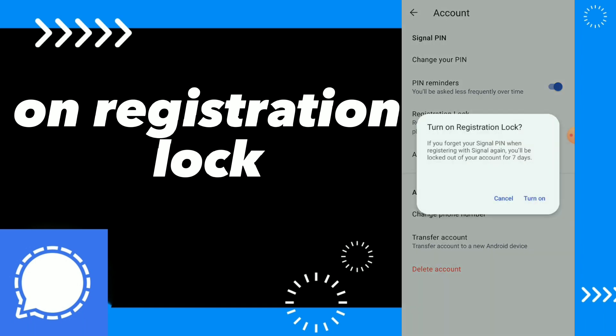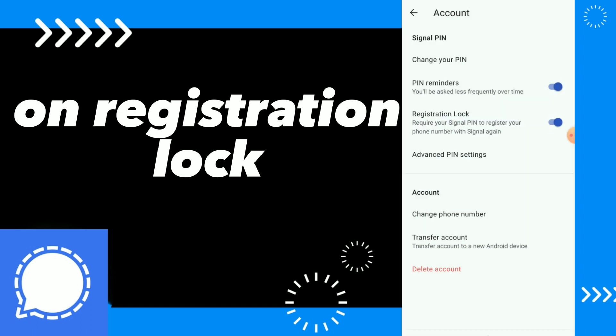To turn on registration lock, click on 'Turn On'. If you forget your Signal PIN when registering with Signal again, you will be locked out of your account for seven days. Click on 'Turn On'.